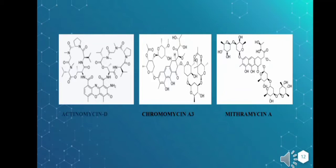Chromomycin A3 is a DNA-binding agent that binds to the minor groove of DNA and inhibits both DNA replication and transcription. Divalent metal ions play a major role in this inhibition process. Mithramycin A is a DNA-binding transcriptional inhibitor that binds to GC-rich sequences in the minor groove of DNA and is noted to be a reversible inhibitor.